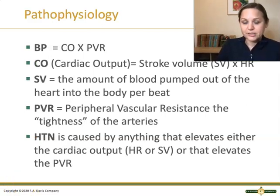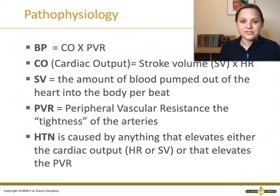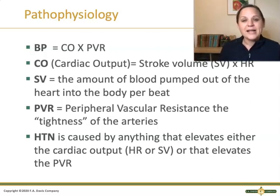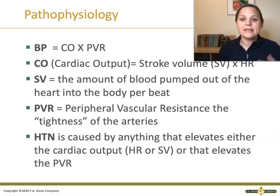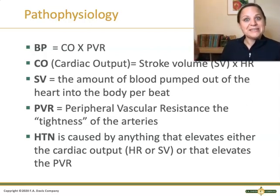The pathophysiology of high blood pressure — what causes it — starts with understanding a few key terms. Our blood pressure number is a combination of cardiac output times the amount of resistance in our vascular system: cardiac output times peripheral vascular resistance. Cardiac output is the amount of blood your heart pumps out over time, calculated as stroke volume — the amount per beat — times heart rate, the number of beats per minute.